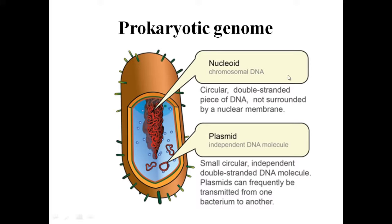Prokaryotes have a structure different from the cell membrane called the mesosome. It is a characteristic of prokaryotes and is essentially an in-folding of the cell membrane.